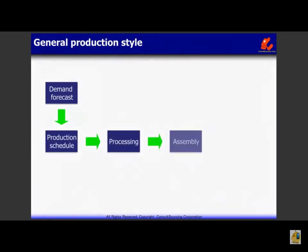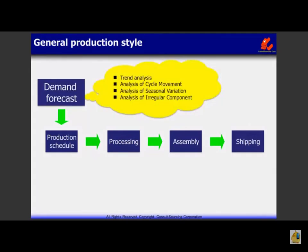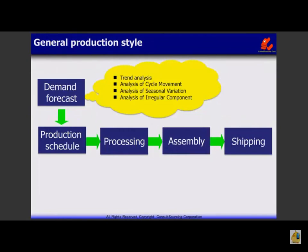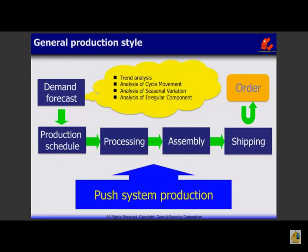A general production style is based on the demand forecast and production schedule. It maintains a certain amount of inventory, and products are shipped from stock every time an order is received. The key factor to minimize inventory while ensuring no stockout is the demand forecast, which is made by analyzing demand trend based on past trends, seasonal factors, and contingency. Based on the production schedule, the most efficient style of material procurement, processing, and assembly is instructed. Completed products are placed in the shipping area and shipped from stock upon order. This is called push system production.